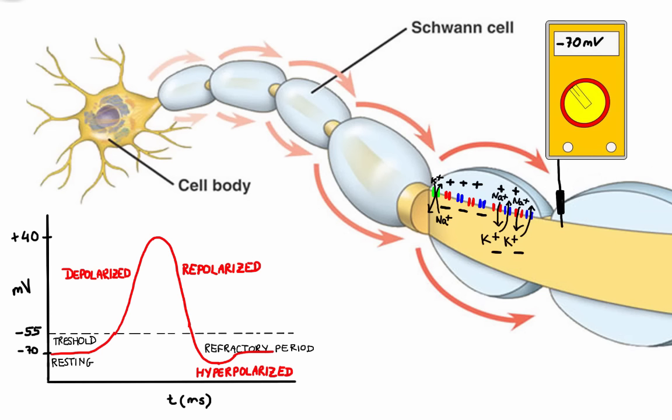So in summary, an action potential is just a wave of depolarization and repolarization. It's not an electric current, it's just a series of voltage-gated ion channels opening and closing.